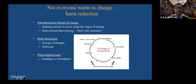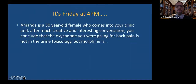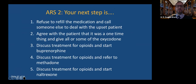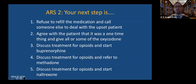Amanda is a 30-year-old woman. After much conversation, you conclude that the oxycodone you were giving her for back pain is not in the urine toxicology, but morphine is. What do you do? Options include refusing to refill, agreeing it was a one-time thing and giving oxycodone, discussing treatment for opioids and starting buprenorphine, discussing treatment and referring to methadone, or discussing treatment and starting naltrexone. A fair number of respondents are thinking about starting buprenorphine or starting methadone — so let's talk more about that.